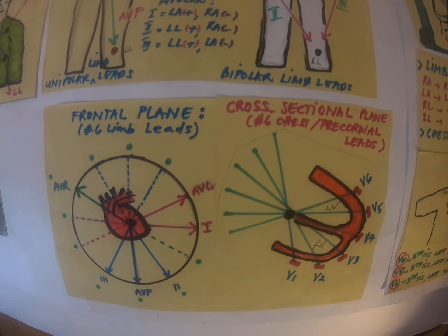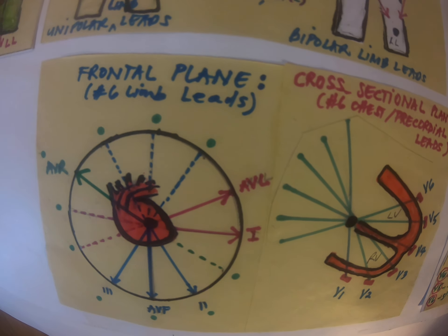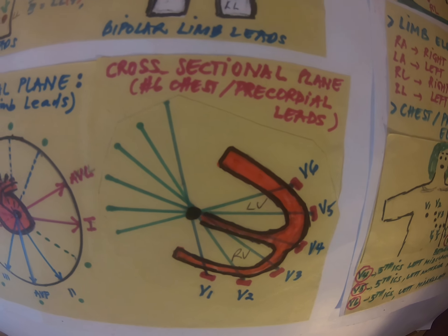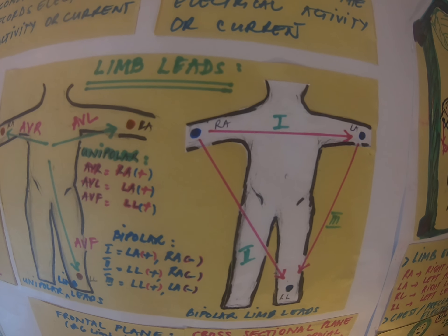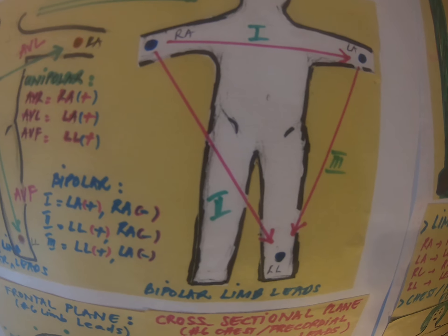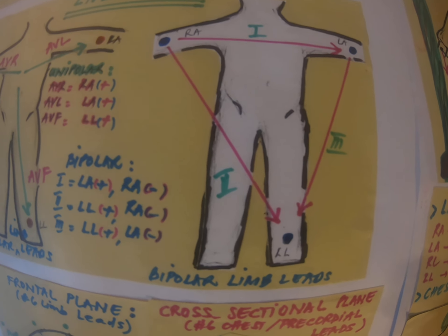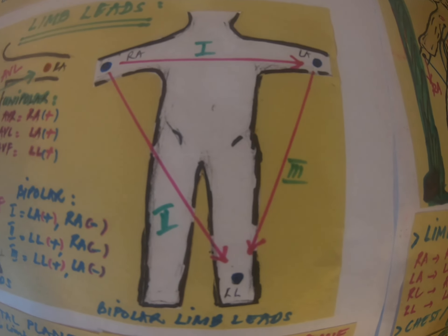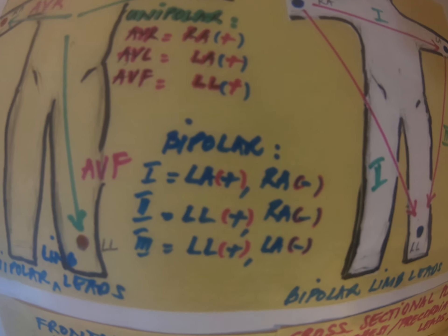There are two planes to view the heart: the frontal plane and the cross-sectional plane. The frontal plane uses limb leads. We have the bipolar limb leads and the unipolar limb leads. The bipolar limb leads have a negative electrode and a positive electrode, and these are leads 1, 2, and 3.